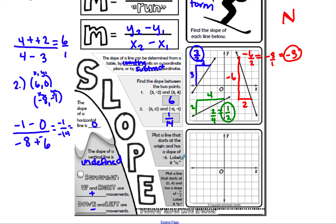Plot a line starting at the origin with a slope of negative three — label it A. Negative three is like negative three over one, so go down three and to the right one. Down one, two, three, then over to the right. Because the slope is negative three, the line should look like the slant on a capital N, going down from left to right — and it does.